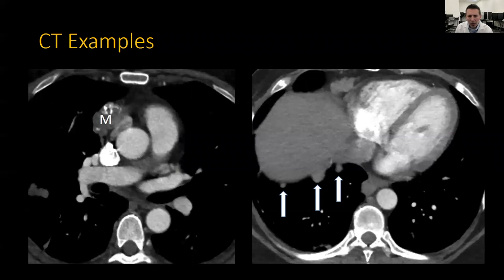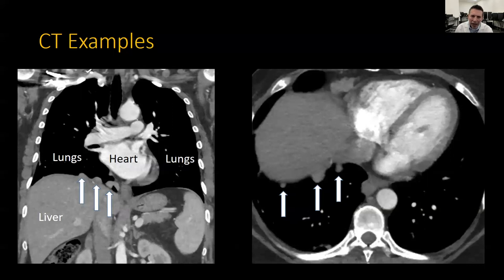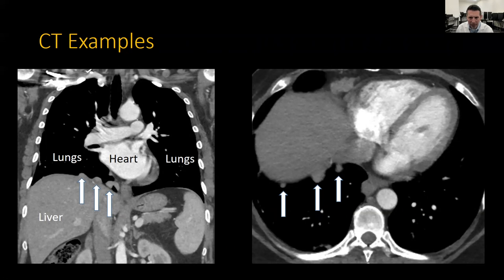Our final CT example shows another mass in the front of the chest marked with M on the left image. On the right image, white arrows indicate small nodules along the pleural surface — the covering of the lungs. Looking straight at the patient, you can see the pleural nodules along the bottom edge of the lungs. This covering of the lungs is a very common place for thymic tumors to spread — called distant metastasis. While CT is generally good at identifying these areas, sometimes these areas are flat and cannot be seen, especially without IV contrast.